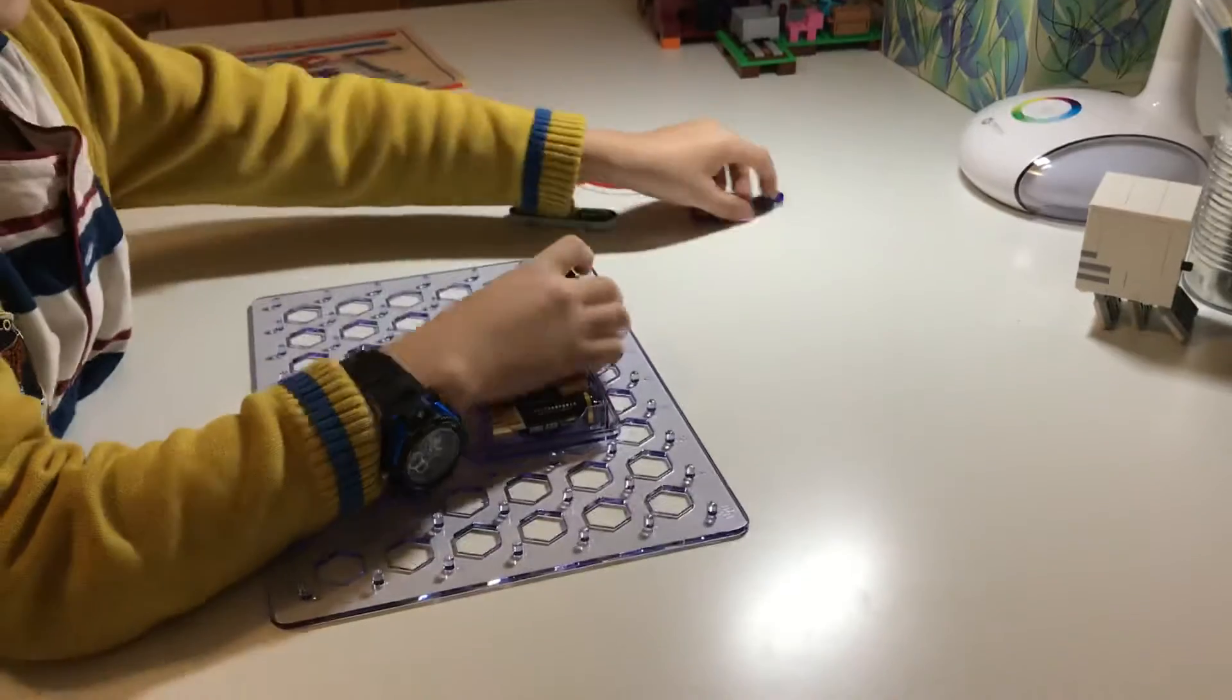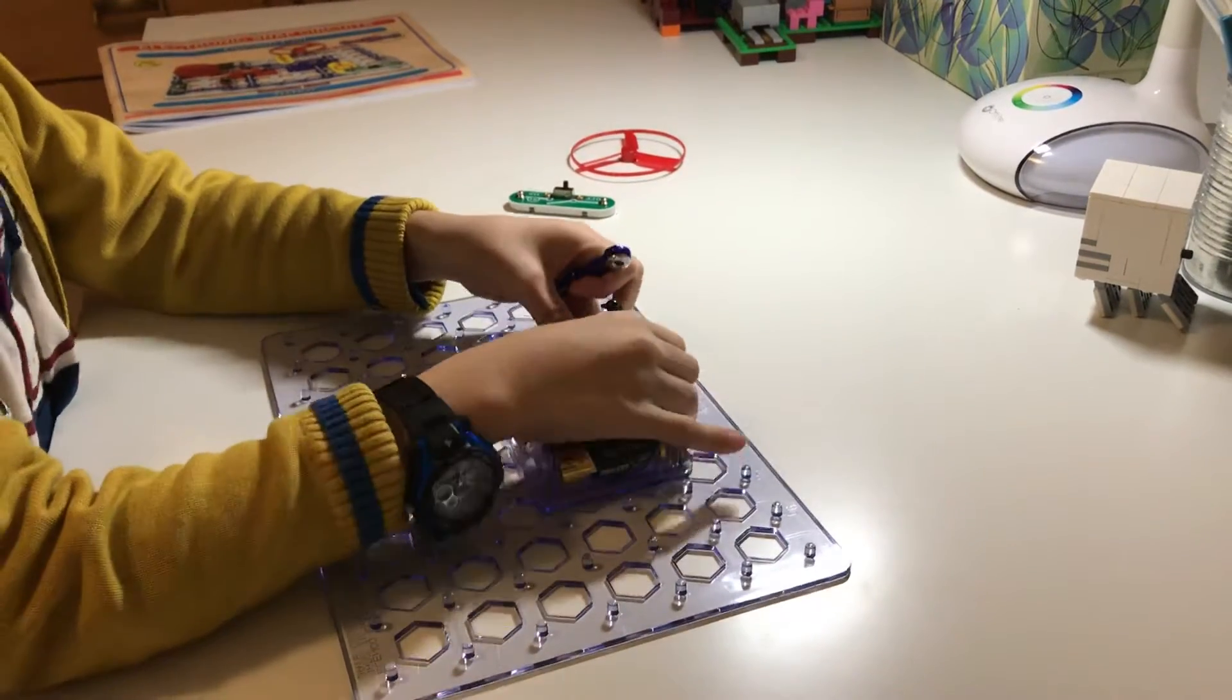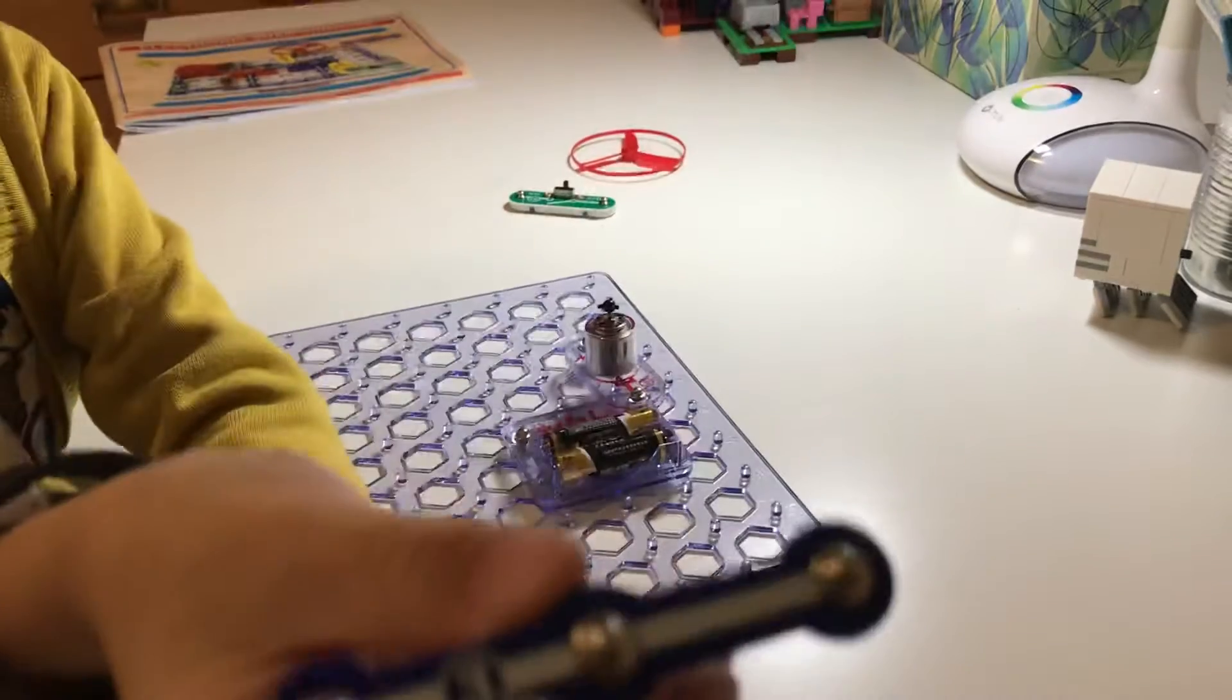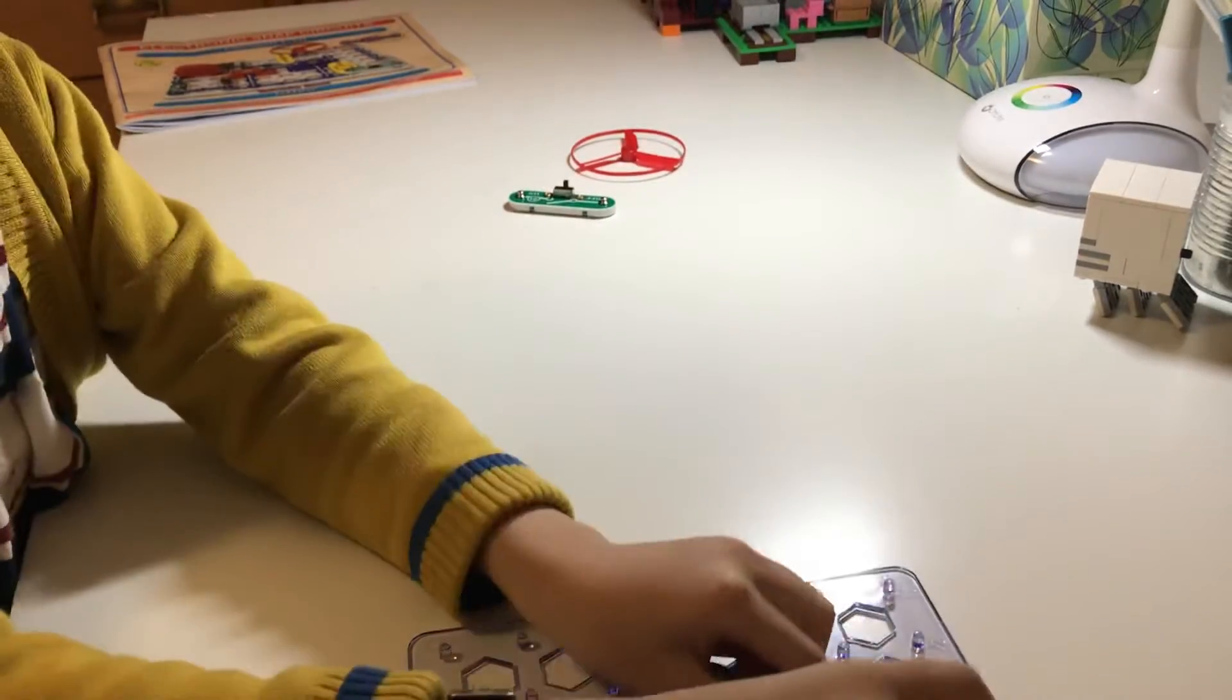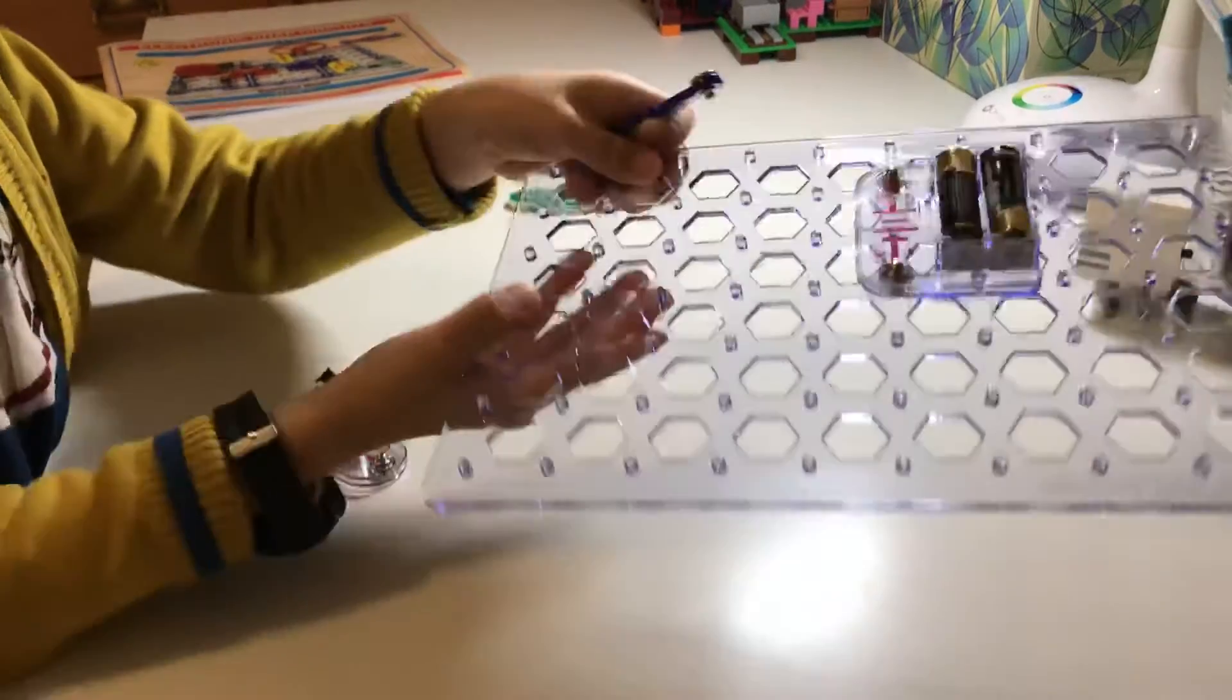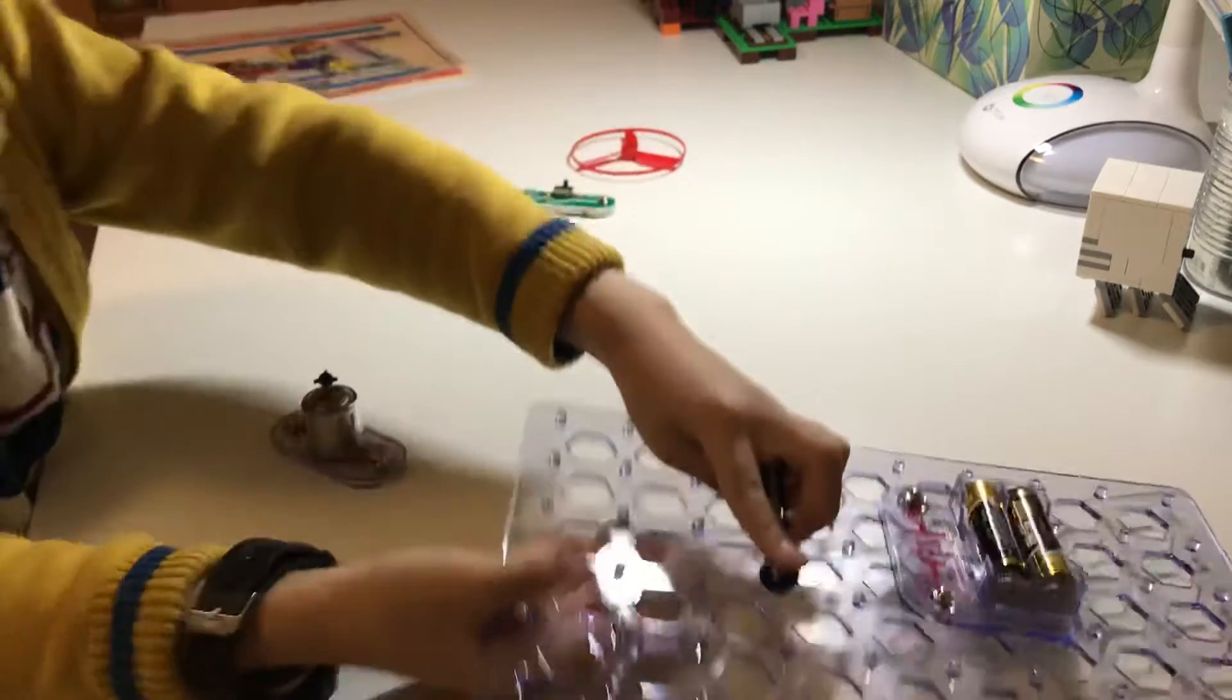Then, third step, you need this blade piece, and you put it here, but you first need to take off the DC motor to do it.